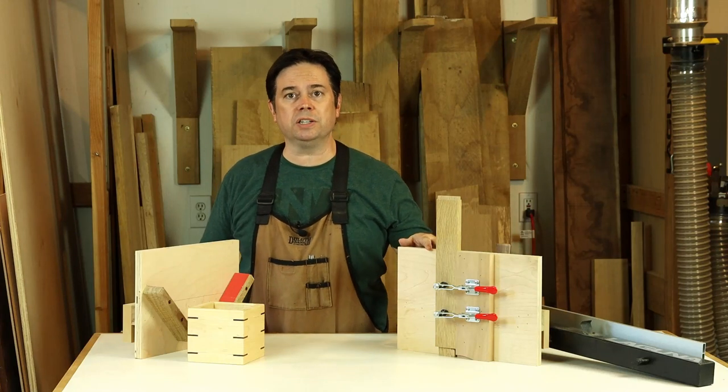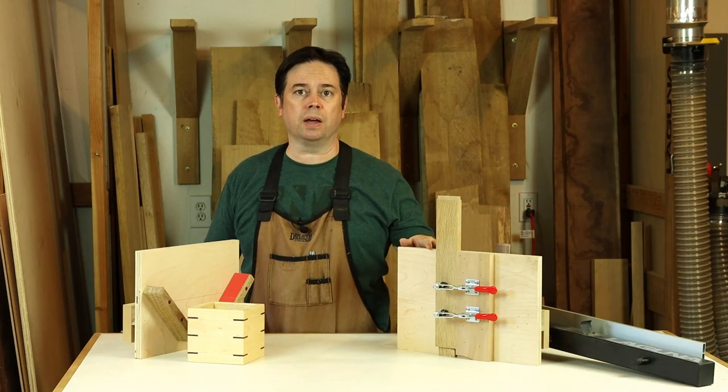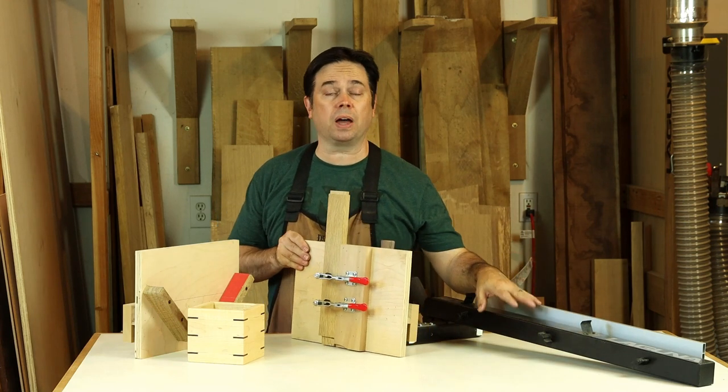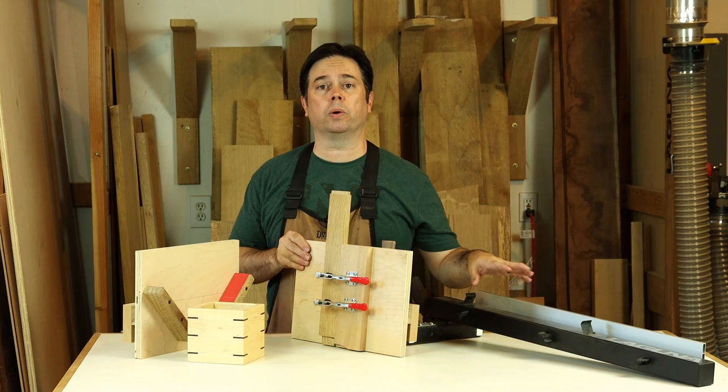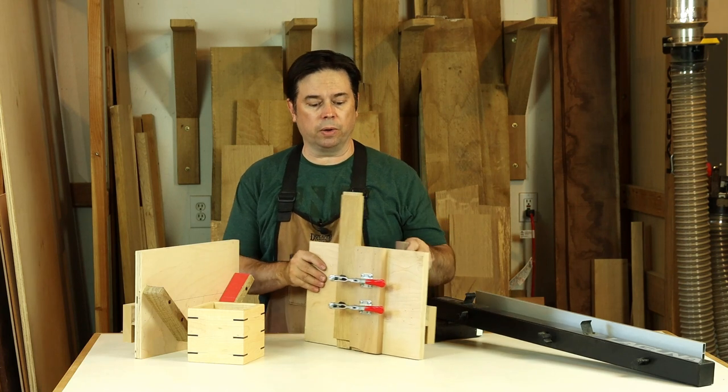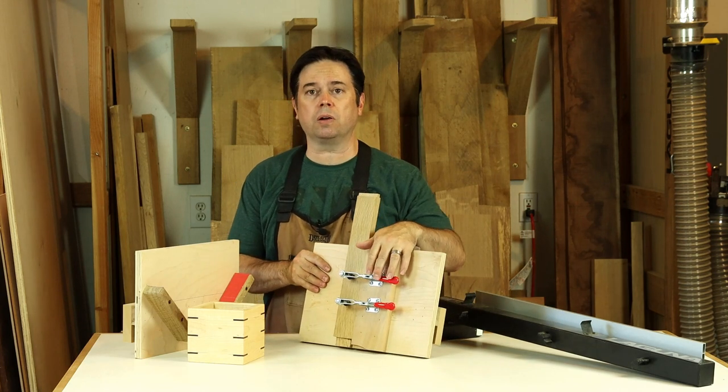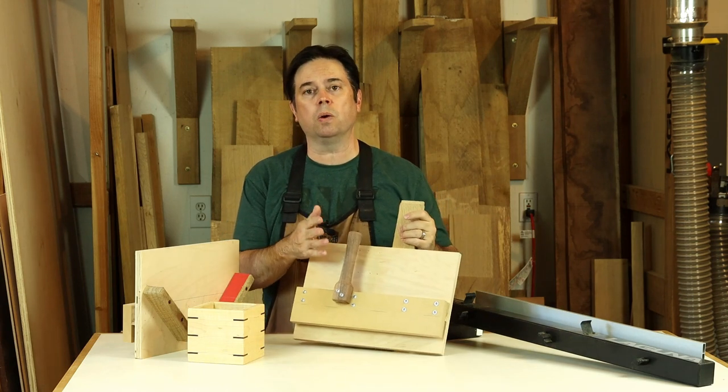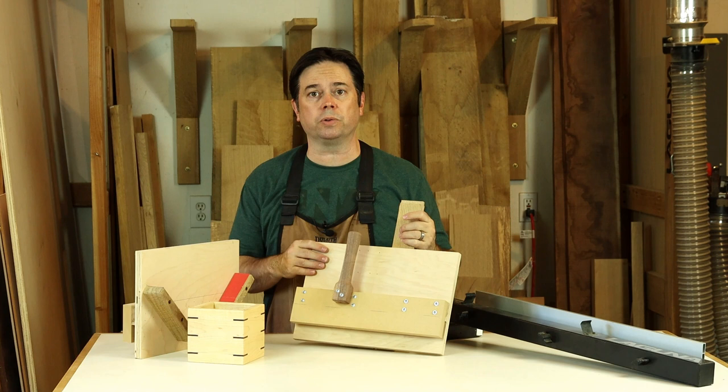Today we're building a tenoning jig that you can make for your table saw. You'll be interested in this particularly if you have a table saw with a high-low style rip fence or you're considering getting one. This has got some great little features. Toggle clamps hold the workpiece in position and it's got this custom-made walnut handle on the back for good control.